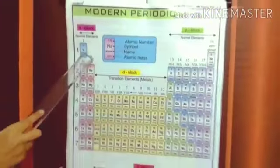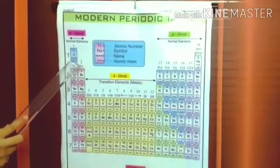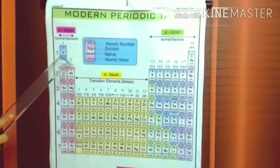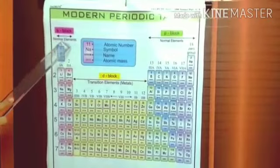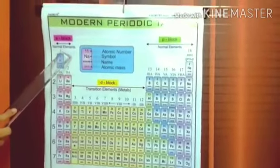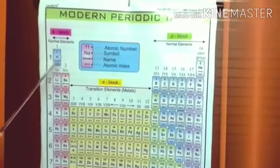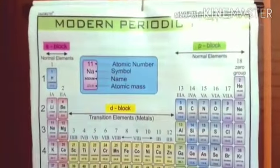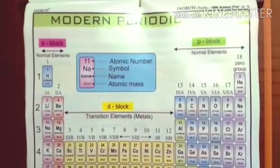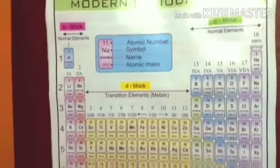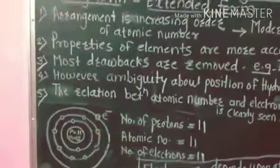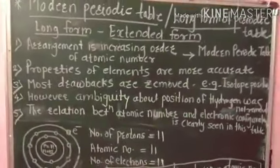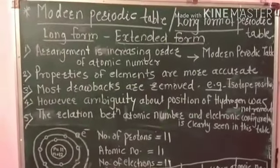So hydrogen is placed in group 1 in the modern periodic table. This is the ambiguity which has not been fully removed in the modern periodic table.